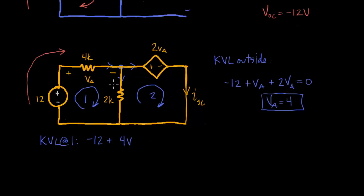We're going through what we're calling the positive terminal here. So plus 2K times I1 minus I2, which is ISC. So I'll just rewrite that immediately as ISC. And this equals zero.